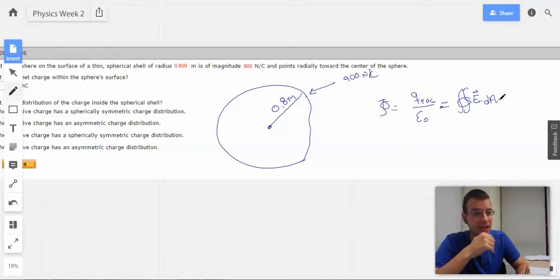And electric field will be constant. So, we can rewrite this as the electric field times the surface area. In this case, this will be 4 pi r squared.